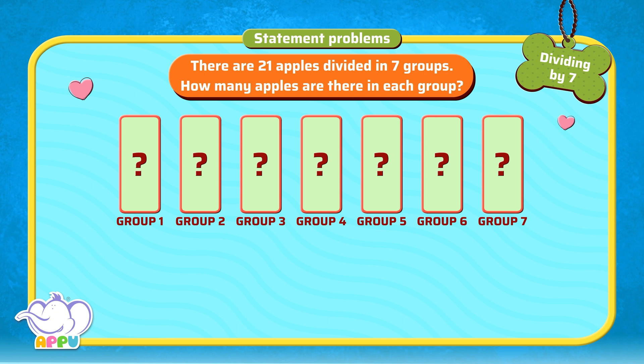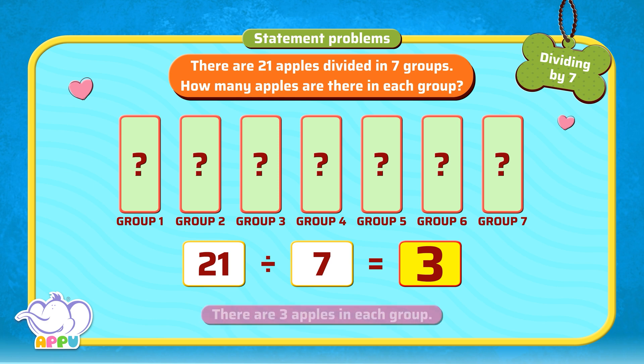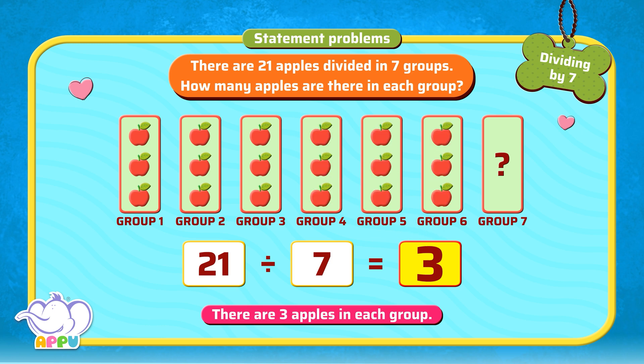Define the number of apples in each group. We divide 21 equally among 7 groups. There are 3 apples in each group. Bravo!